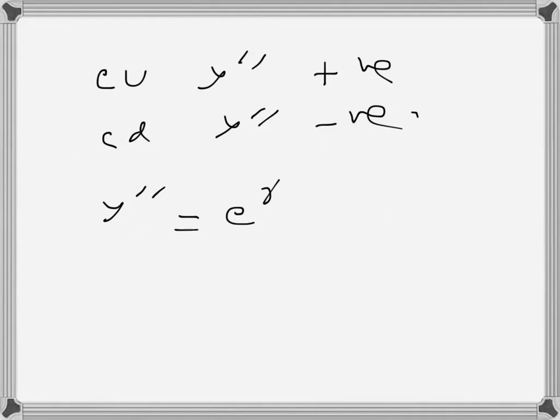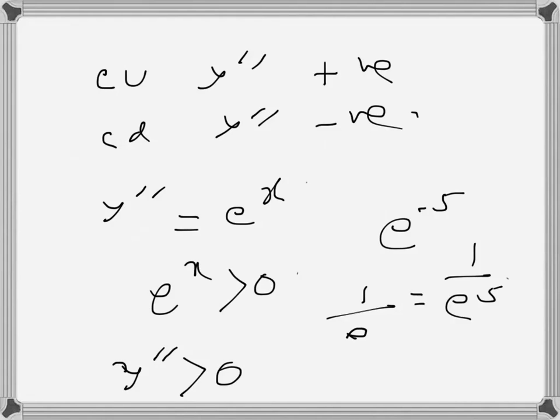It can be seen here that y'' = e^x, and for any value of x this is positive. Even if x is negative, it will be 1 over... say x is -5, that would be e^(-5) which is a fraction. So y'' is always greater than 0 for any value of x, and that's why the curve is always concave up.